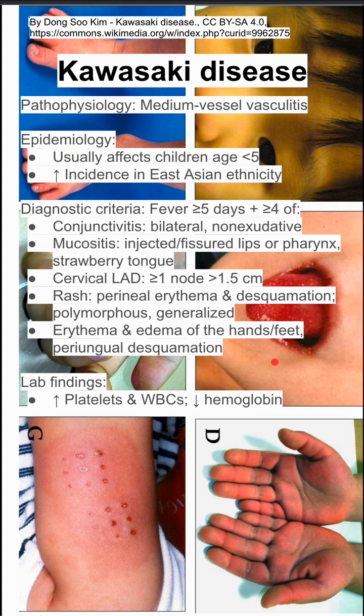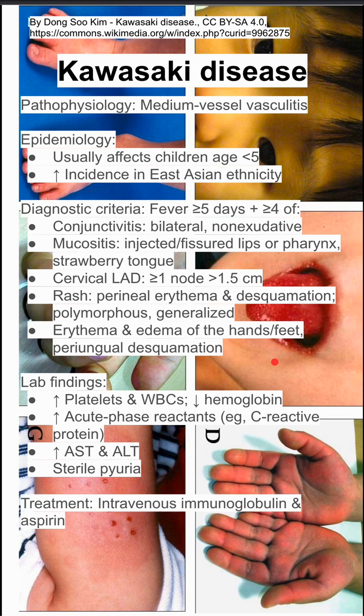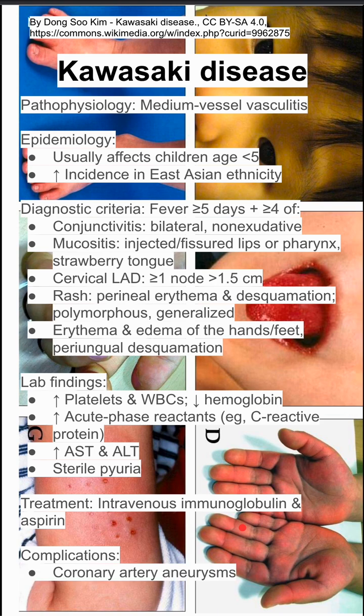Lab findings you'll see: increased platelets and white blood cells with decreased hemoglobin. They'll have increased acute phase reactants like C-reactive protein, high liver enzymes, and sterile pyuria. The treatment is IVIG and aspirin, and some potential complications are coronary artery aneurysm and ventricular dysfunction.